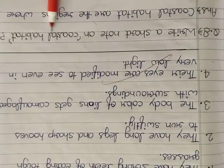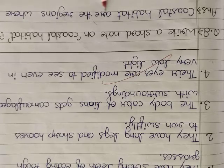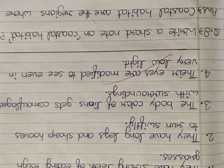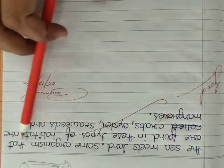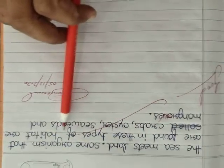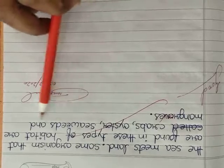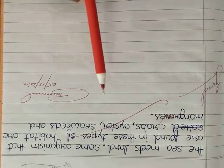Next question is Write a short note on coastal habitat. Coastal habitat are the region where the sea meets land. Some organisms that are found in these types of habitat are crab, oysters, seaweeds and mangroves.